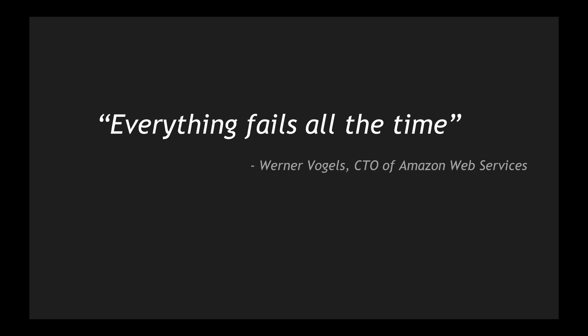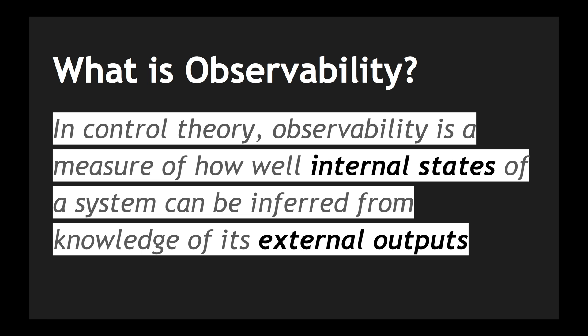"Everything fails all the time" — we have heard this quote from the CTO of Amazon Web Services. He has been quoting this so that we all take it seriously and work towards making our microservices self-sustaining and reactive towards failure events. In order to understand observability, if you go to Wikipedia, the definition is: in control theory, observability is a measure of how well internal states of a system can be inferred from the knowledge of its external outputs.